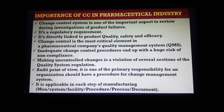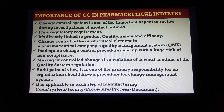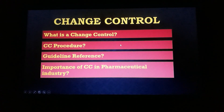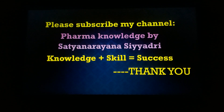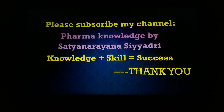The scope of this change control system covers each step of the manufacturing facility — procedure, process, and document. That is why the change control process is very important in the pharma industry, as every change in the system directly impacts product quality, safety, and efficacy. This is the topic we discussed today. Please subscribe to the channel, watch all previous videos, and share with your colleagues. Thank you for watching.